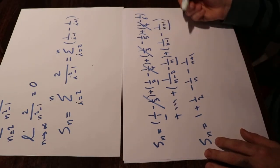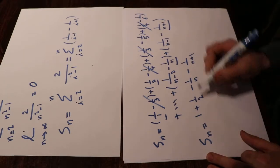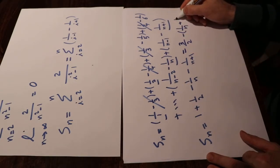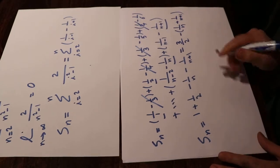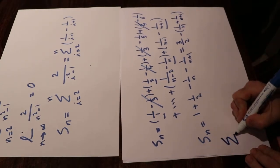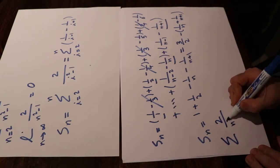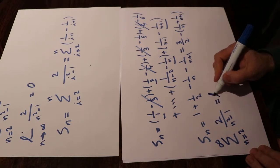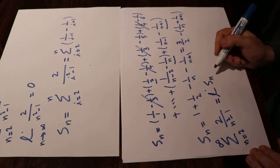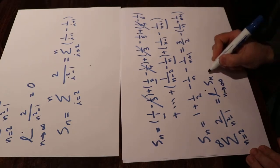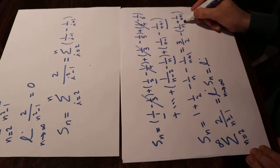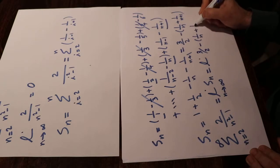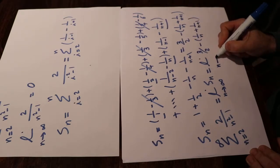In any case, Sₙ is equal to 3/2 minus 1/n minus 1/(n+1). So the series sigma 2 divided by n² minus 1 when n changes from 2 to infinity equals the limit of Sₙ as n goes to infinity, which is the limit of 3/2 minus 1/n minus 1/(n+1) as n goes to infinity.